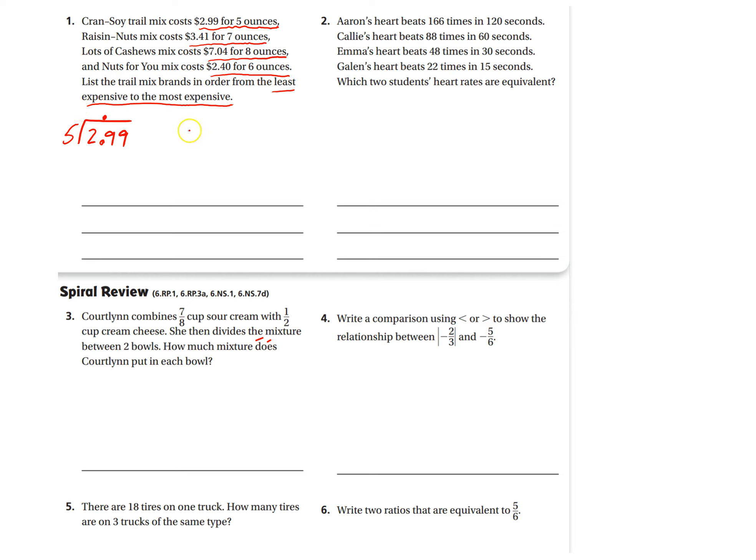Then you'll do the division for the next one. Seven ounces is $3.41. If you do this division, you'll find out how much it costs for one ounce. Next one, eight ounces is $7.04. Do the division. And then you'll find out how much it costs for one ounce. And then, again, here, six ounces is $2.40. When you do the division, that will tell you how much it costs for one ounce.